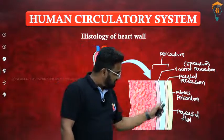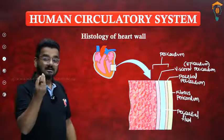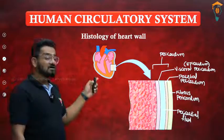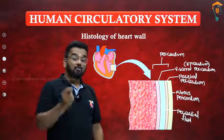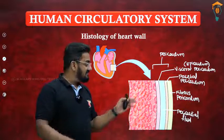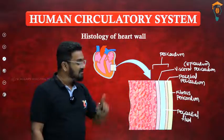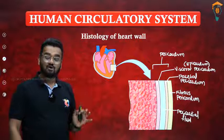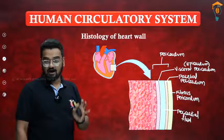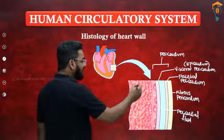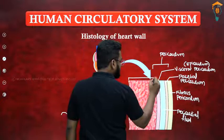The function of the pericardial fluid: since the heart is continuously pumping from birth until death, and different organs surround it, this pericardial fluid prevents friction between the heart and surrounding organs. It also provides shock absorption, along with the fat present around the heart.